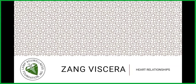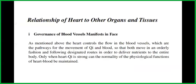Let's go to Zang Viscera. The topic is Heart Relationships — the relationship of the heart to other organs and tissues. Number one is governance of blood vessels, manifested in the face. As mentioned above, the heart controls the flow in the blood vessels, which are the pathways for the movement of Qi and blood, so that both move in an orderly fashion following designated routes in order to deliver nutrients to the entire body.